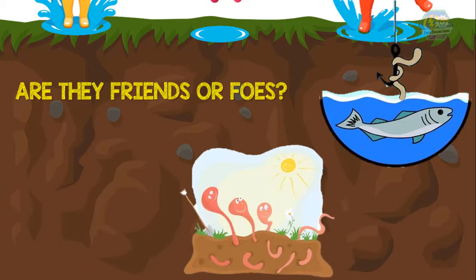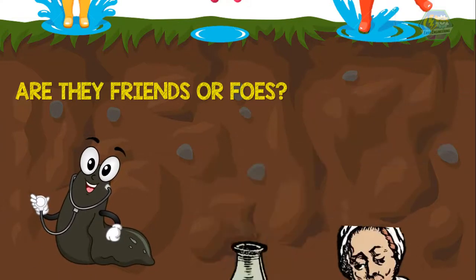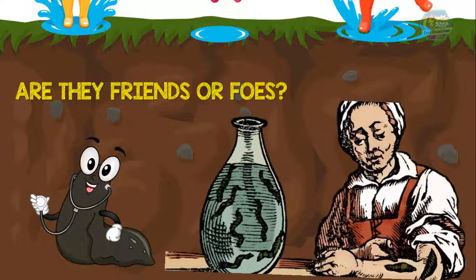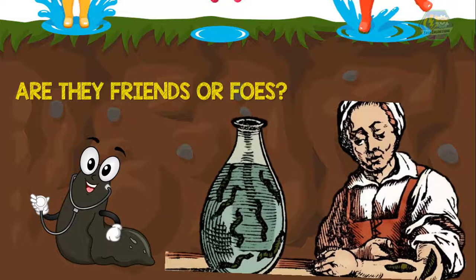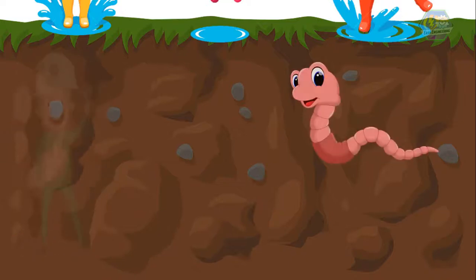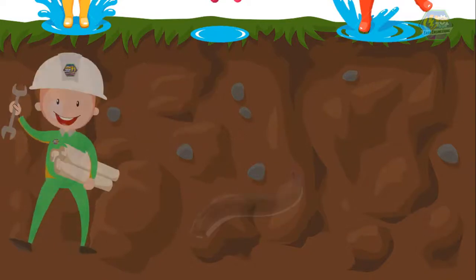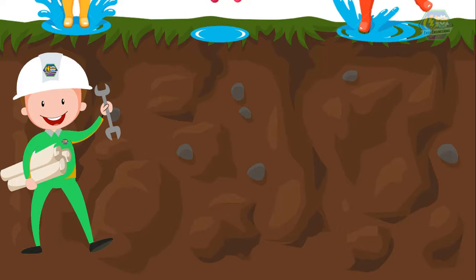Even some leeches are helpful too. Well-known medicinal leeches are blood suckers, but they can be placed in a position where they suck out only our toxic blood. So learners, now we've learned that annelids aren't just our foes — in some ways, they are our friends too. That is all for now; I hope you learned something today. Have a nice day!